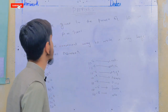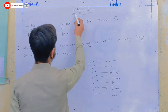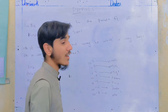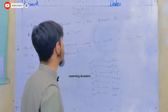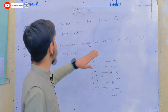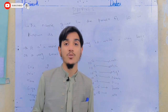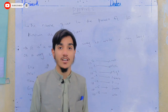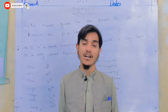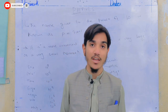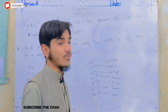First of all, the topic is Prefixes. Prefixes means the name given to the power of a number. If you want to write a very large number or a very small number, you have to write this thing in the power of 10.